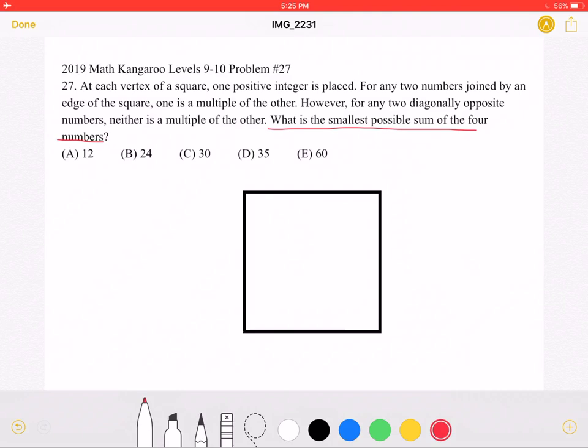So the least possible positive integer would be 1. However, the problem states that any two diagonally opposite numbers, neither is a multiple of the other. And if we had 1, 1 is a multiple of all the other integers, so that wouldn't work.